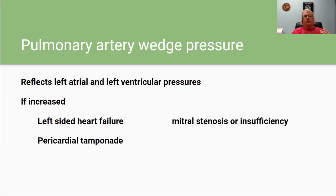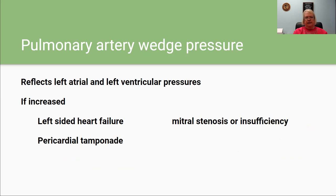Pulmonary artery wedge pressure reflects left atrial and left ventricular pressures. If it's increased, the causes include left-sided heart failure, pericardial tamponade, or mitral stenosis or insufficiency.